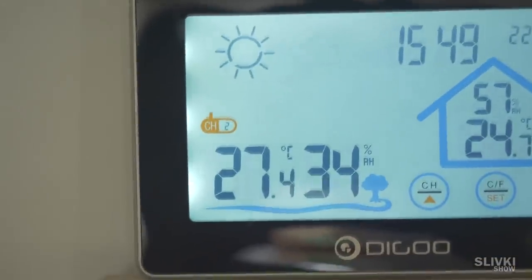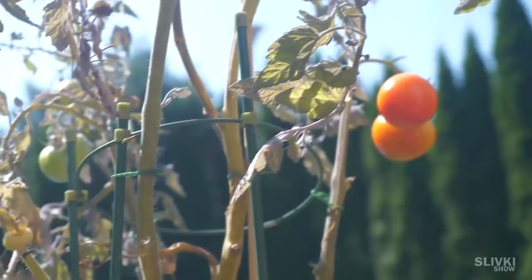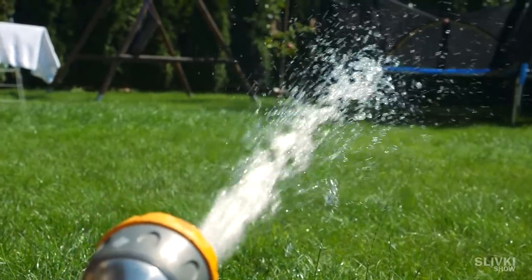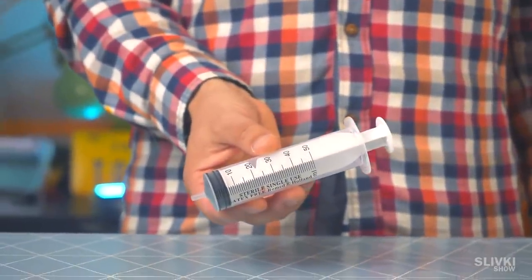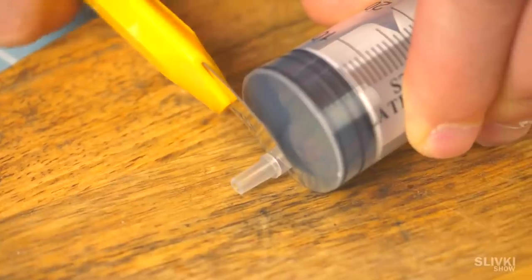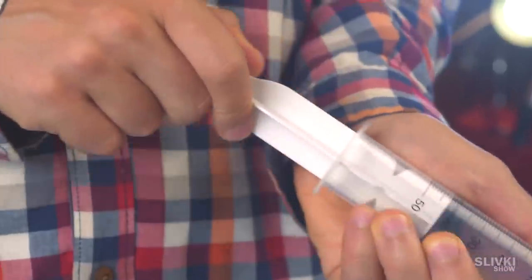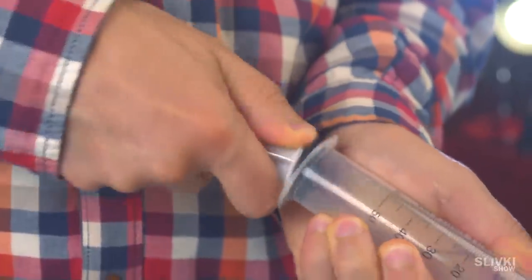On hot summer days we sometimes want to eat something tasty and cool. Now we're gonna show you how to make delicious ice cream with this big syringe. We cut off the nose from the syringe and seal the hole with hot glue. The piston needs to be removed.